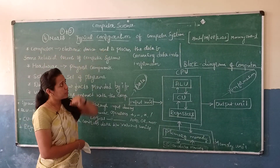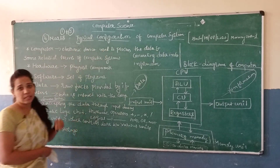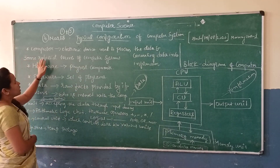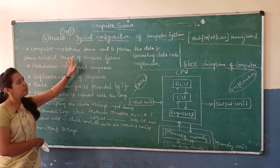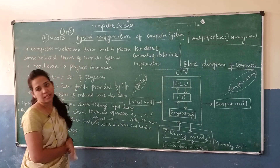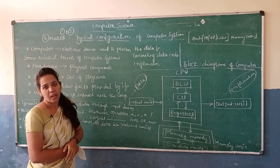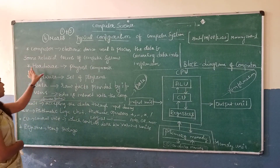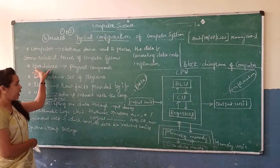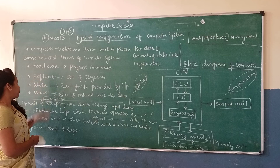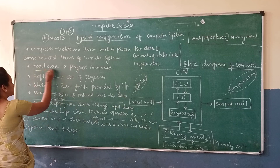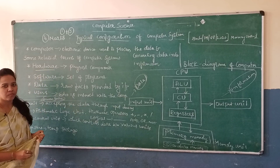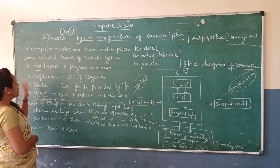In this chapter, 'Typical Configuration of Computer System,' we have to know some related terms of computer systems. What are those terms? Hardware, software, data, and users.